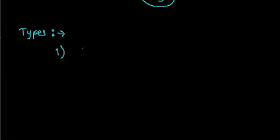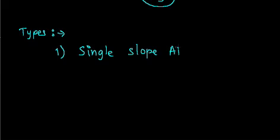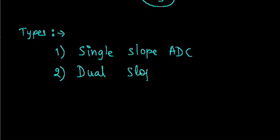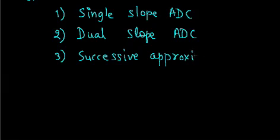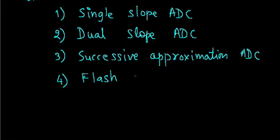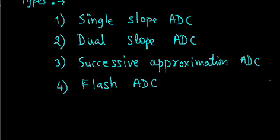There are various types. First one is single slope ADC. The second type is dual slope ADC. The third type is successive approximation ADC and the fourth one is flash ADC. There are some more types, but four are important for us: single slope ADC, dual slope ADC, successive approximation ADC and flash ADC.